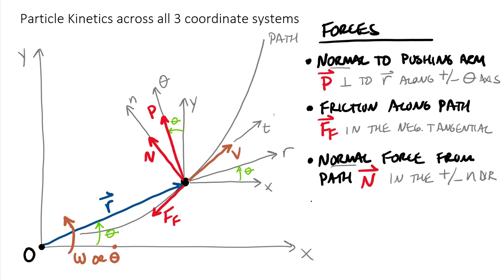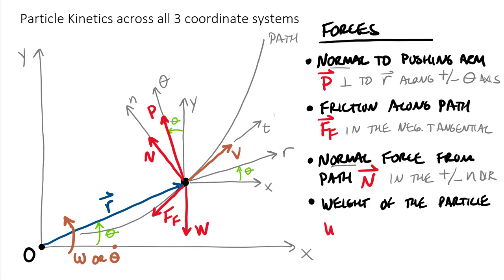The fourth force applies when the system is in a vertical plane. If the path, arm, and particle are oriented vertically — like on a computer screen — we must account for the weight of the particle. Weight always pulls down toward the center of the earth, so the weight force W acts in the negative y direction. There could be other forces, but we'll limit it to these four for now.